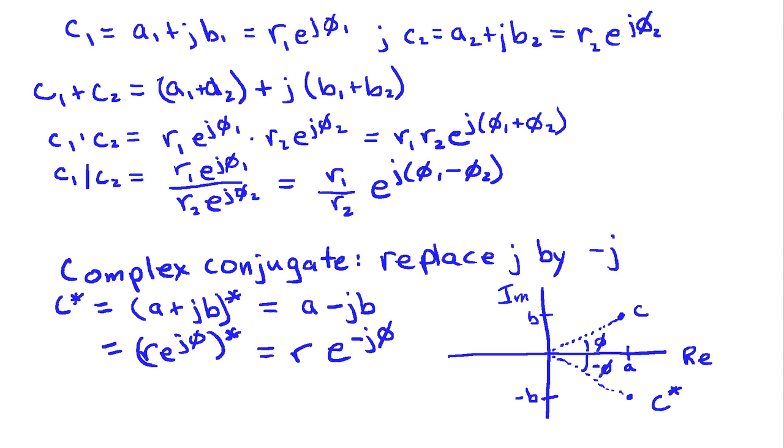One interesting property of the complex conjugate is that if I take a number and I multiply it by its own complex conjugate, I end up with, well let's just do it here. We'll do r e to the j phi times r e to the minus j phi. And you can see that this is just, the phase angles cancel out because I have phi plus minus phi which is zero. So this is just r times r which is r squared. So this number times its complex conjugate gives us the magnitude squared of the number.